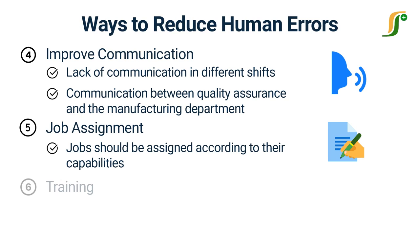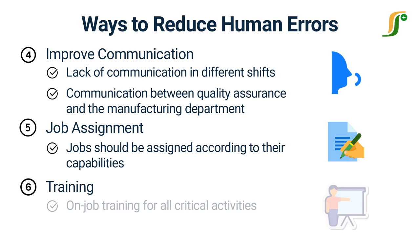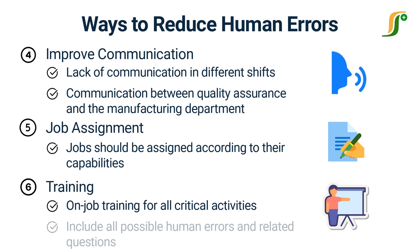Training. On-job training is necessary for all workers for all critical activities. Training should include all possible human errors and related questions that may occur during the process.